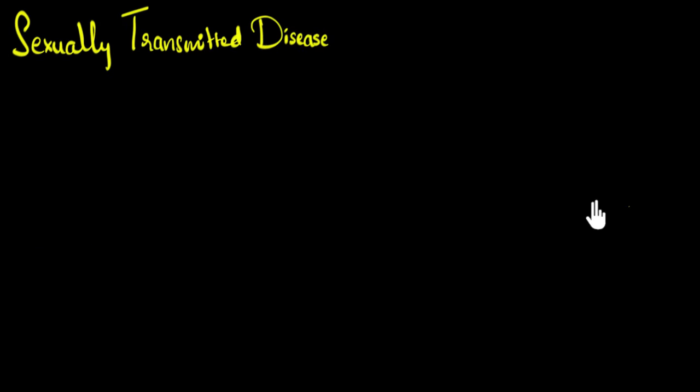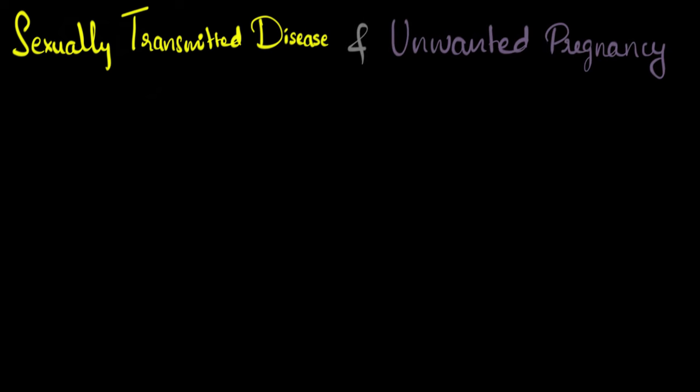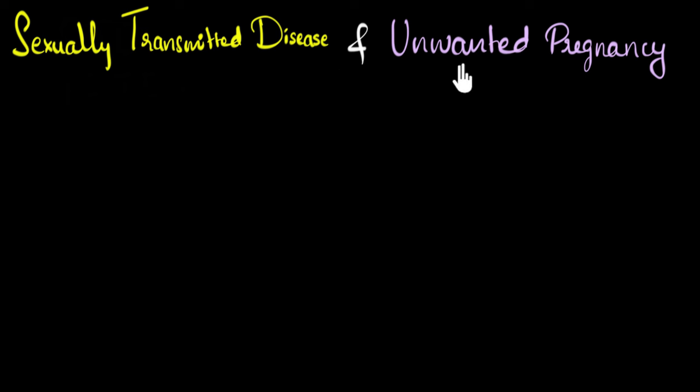Please note that this video has sexual health content. Sexual intercourse can cause two big problems: sexually transmitted diseases, in short we call them STDs, and second, it can also cause unwanted pregnancy. In this video, we'll talk about how contraceptives can help us avoid these. But before we begin, let's talk a little bit about these two.